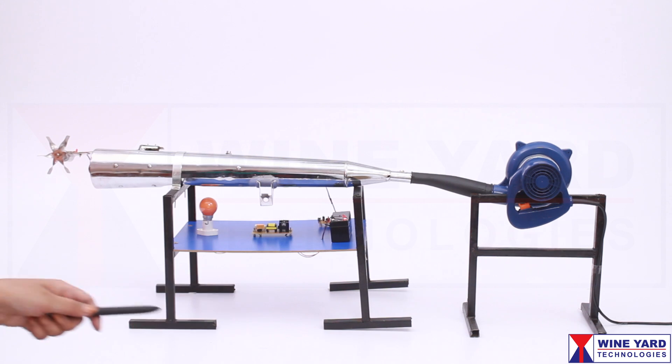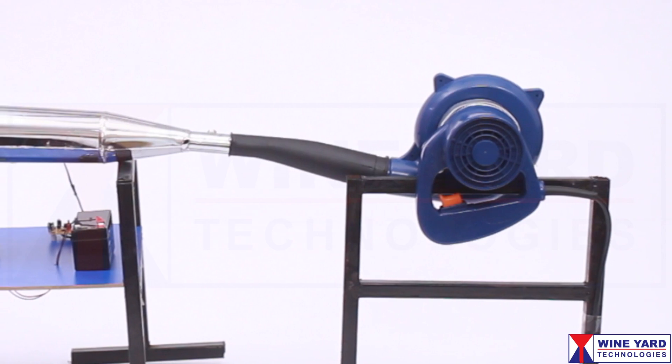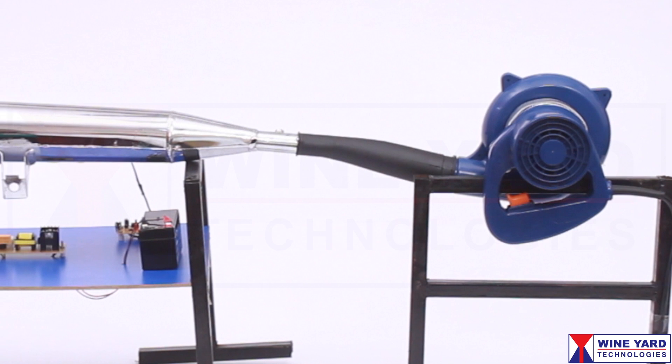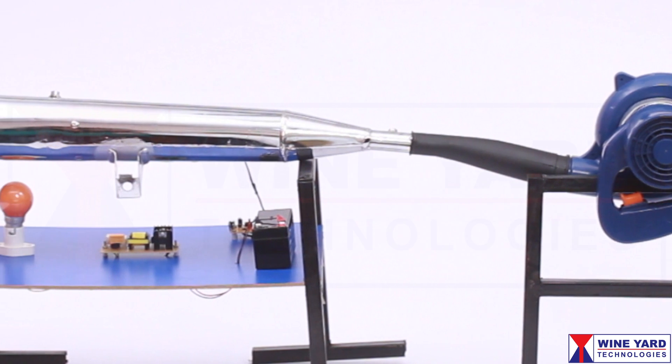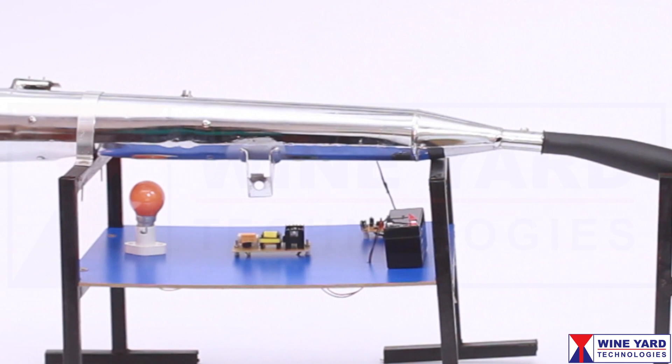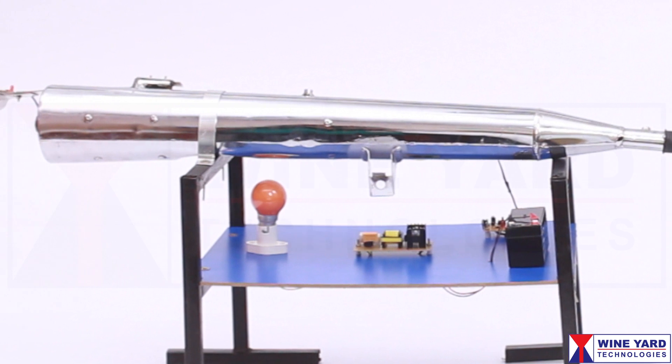This project is non-conventional power generation using a two-wheeler silencer. When an automobile engine runs, it releases high-pressure exhaust gas. In this project, we are generating electricity using this exhaust gas pressure.